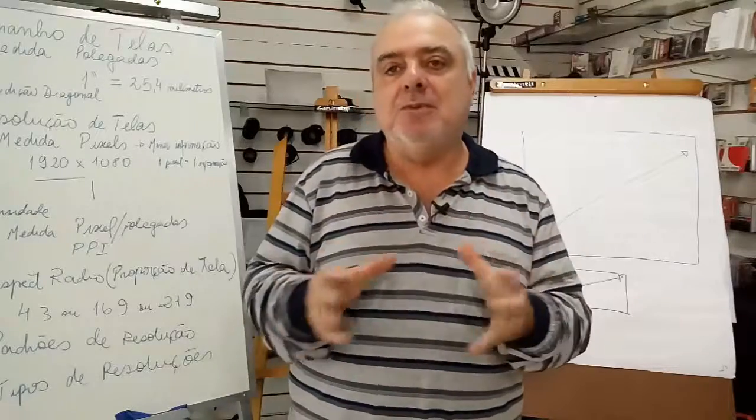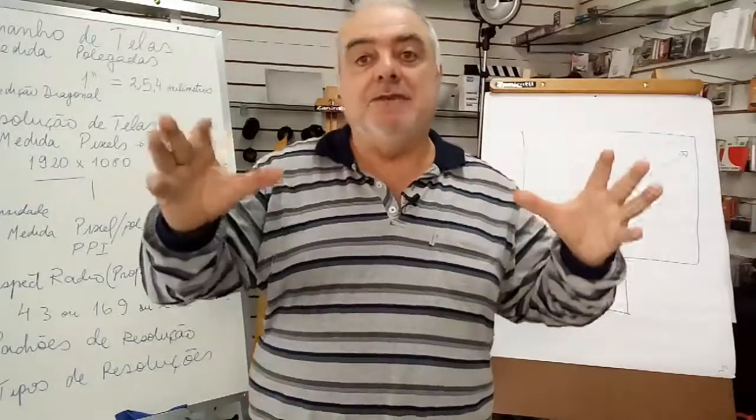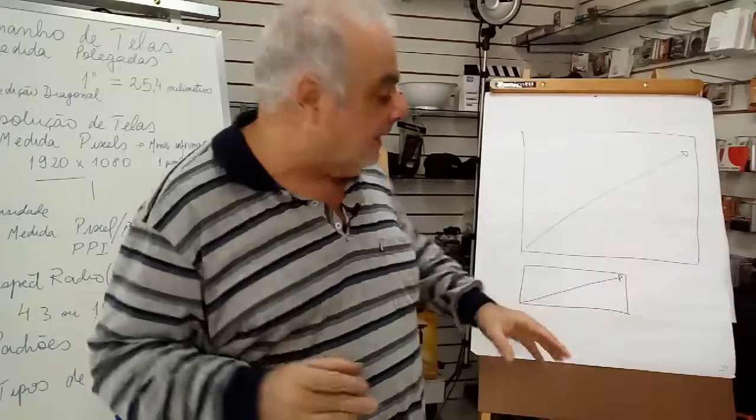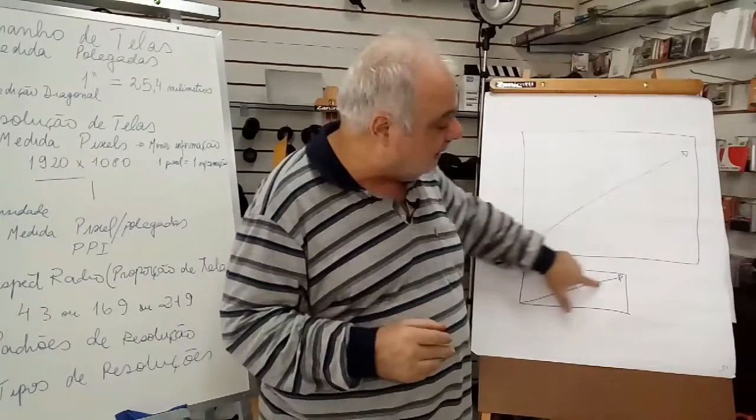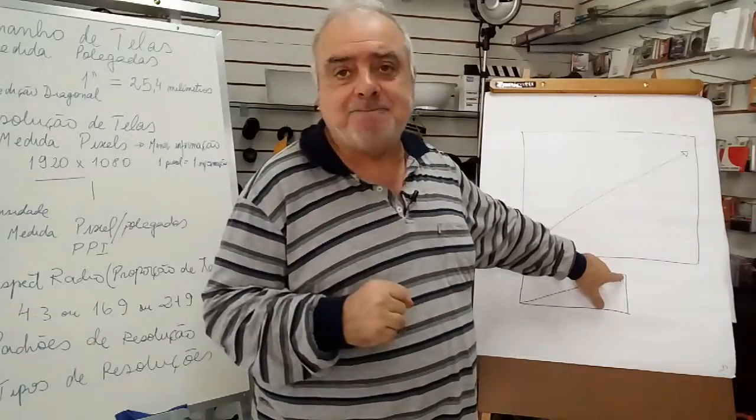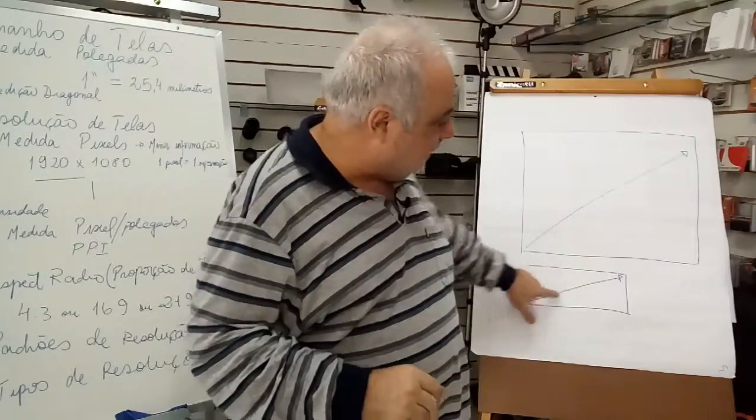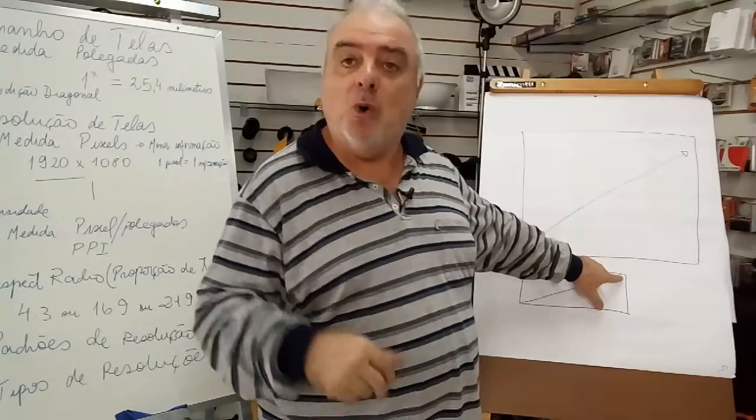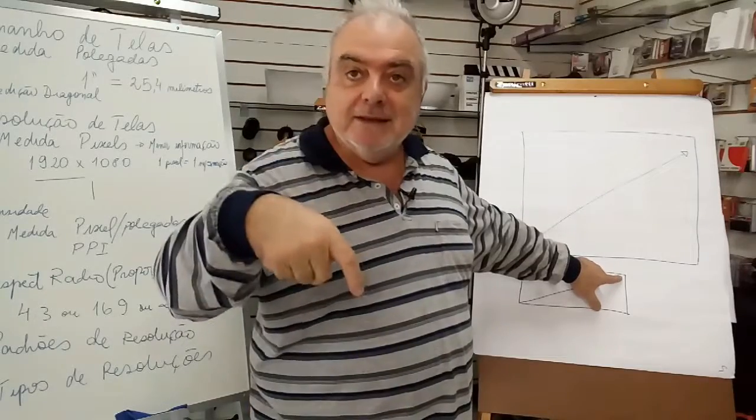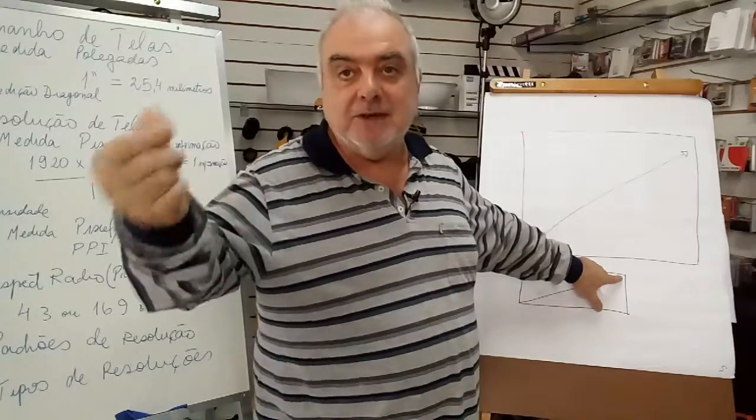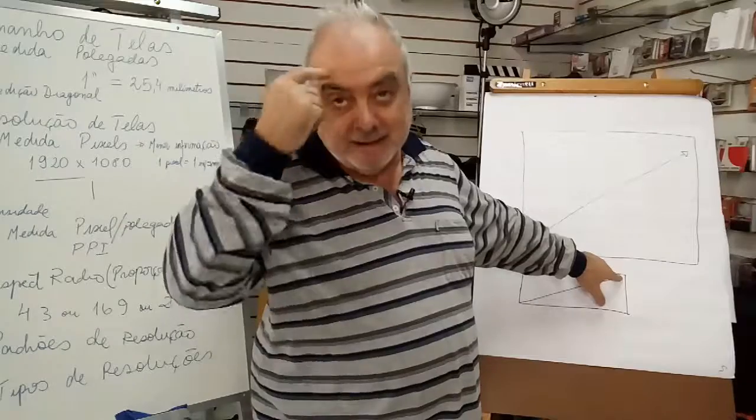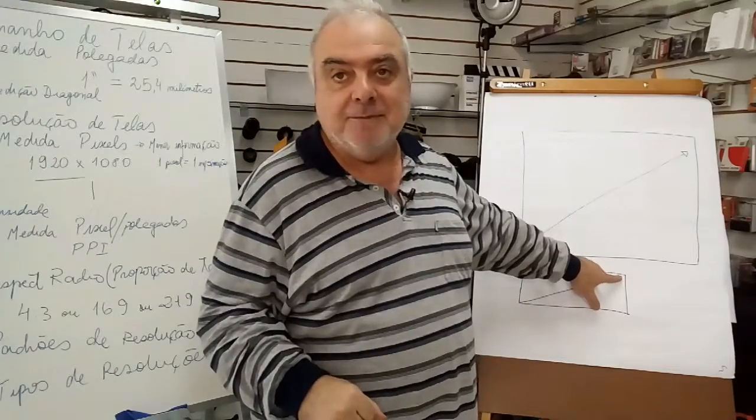Então, a medida é sempre a mesma. É de uma ponta à outra onde aparece a imagem, onde está a parte digital e que as imagens aparecem. Este é o item polegadas. Então, quando se anuncia numa loja, olha, temos um televisor de 40 polegadas, é porque esta dimensão aqui deu 40 polegadas. 42 polegadas, a mesma coisa. Esta medida tem que dar 42 polegadas. Ou 40 vezes 2,54 centímetros, para entender as nossas medidas.